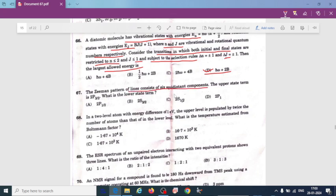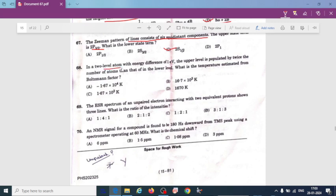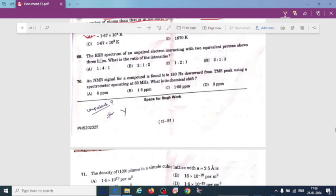The Zeeman pattern of lines consists of six equidistant components. The upper state term is 2p 3 divided by 2. What is the lower state? This lower state is 2s half. In a two level atom with energy difference one electron volt, the upper level is populated by twice the number of atoms than that of the lower level. What is the temperature estimated from Boltzmann factor? Minus 1.67 times 10 to the power 4 Kelvin. ESR spectrum of unpaired electron interacting with two equivalent protons shows three lines. What is the ratio of intensities? This is 1 is to 2 is to 1.